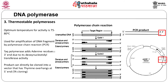Originally, its error rate was measured at about 1 in 9000 nucleotides. Some thermostable DNA polymerases have been isolated from other thermophilic bacteria and archaea, such as Pfu DNA polymerase, which possesses proofreading activity and is being used instead of or in combination with Taq for high-fidelity amplification.